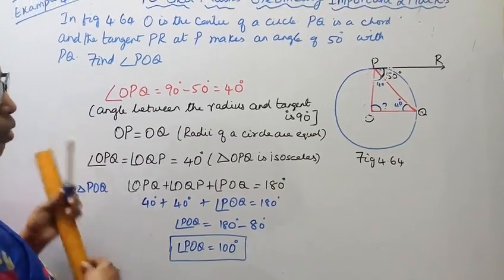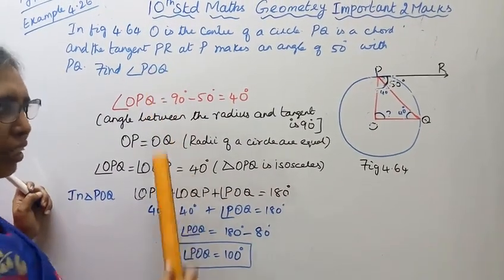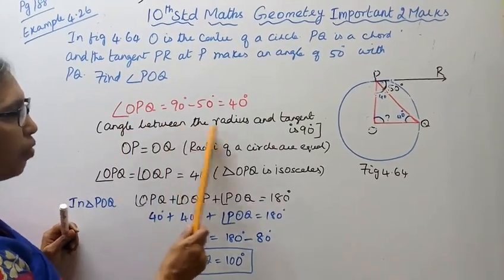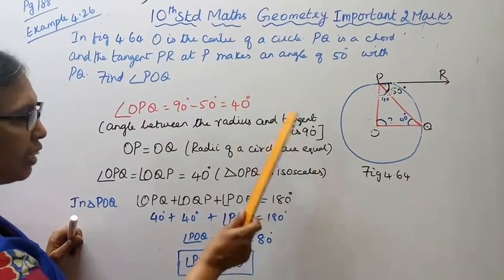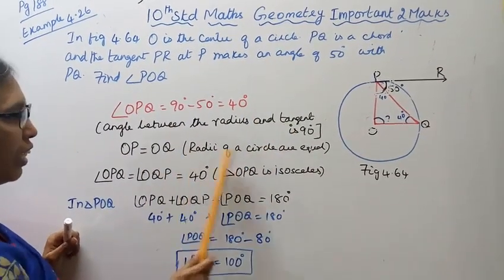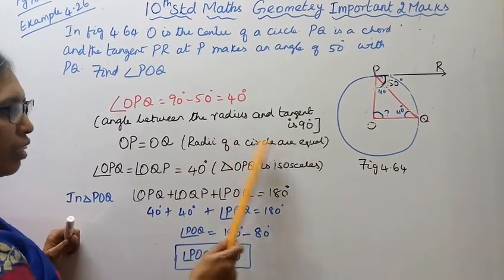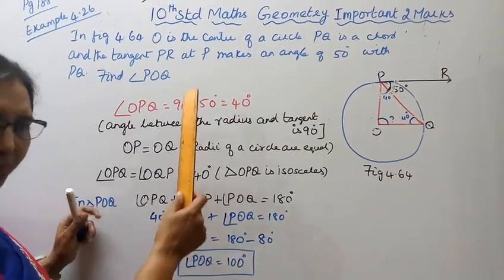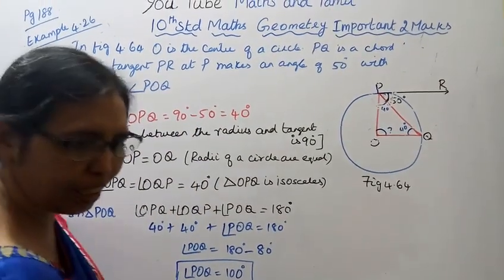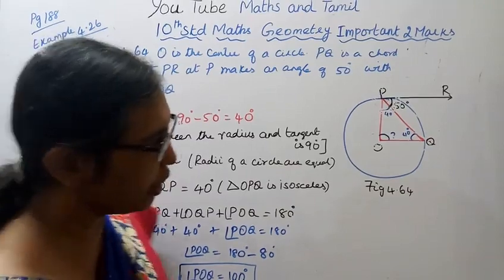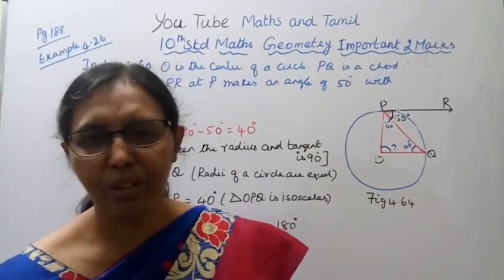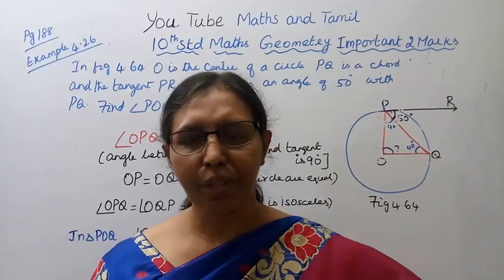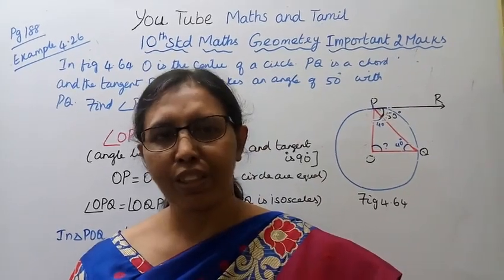It is easy — the angle between the radius and the tangent is 90 degrees, and the radii of the circle are equal. This approach helps you get full marks. Subscribe to the channel and click the bell button.